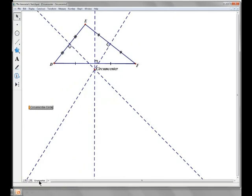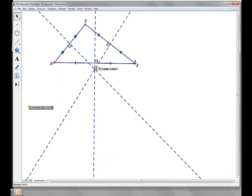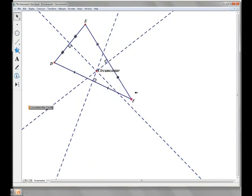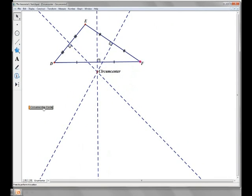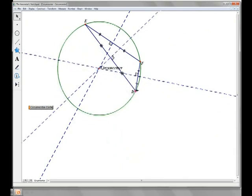And then if I go to all three perpendicular bisectors, you can see how all three meet at the same point, the circumcenter. And then this is a cool little animation. You can click on that and it'll circumscribe the circle, with the circumcenter being the center of that circle.